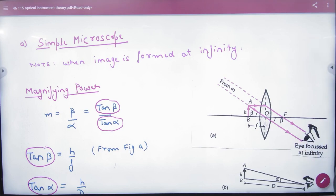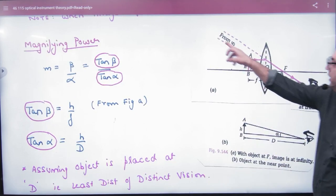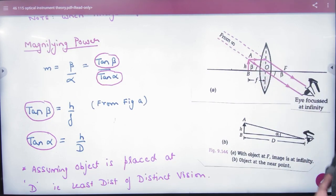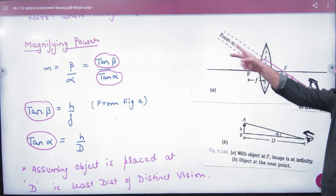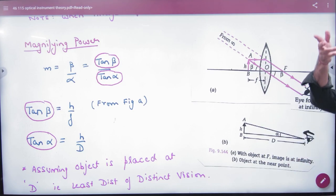Number two, its magnifying power. In magnifying power, we can see tan beta by tan alpha. So this image which will be made has made the angle beta. Alpha is not showing it, because I will tell you how it will show. So this image has made beta and the angle of object is alpha.